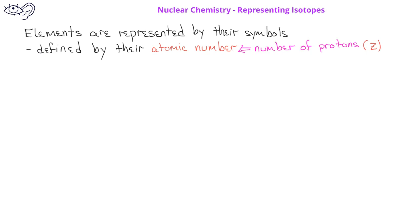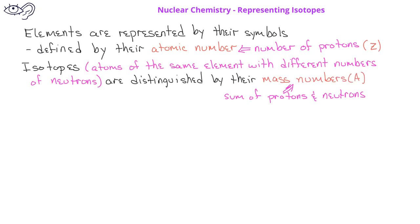Different isotopes of an element are distinguished by their mass numbers, represented by capital letter A, which is the sum of the protons and neutrons in the nucleus.